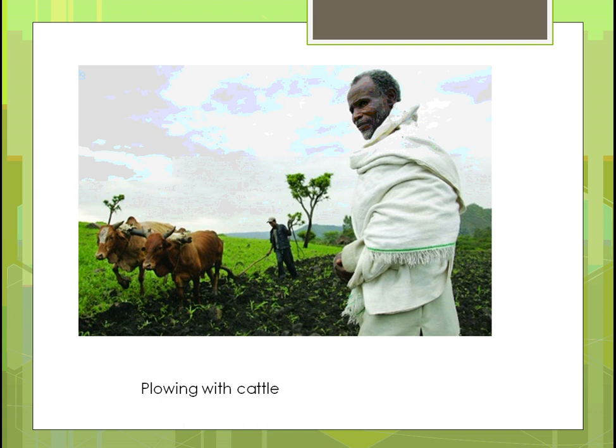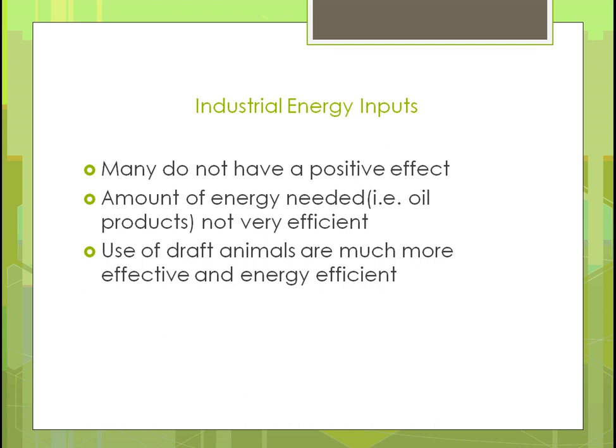Here's a current-day example from Africa showing the farming methods they use — cattle pulling a plow. They don't have much mechanization, though they're increasingly being pushed toward it by outside groups. Many industrial energy inputs don't have a positive net effect — the oil used isn't efficient or renewable. Some believe going back to using animals is more energy efficient, though on a large farm it would take tremendous time.